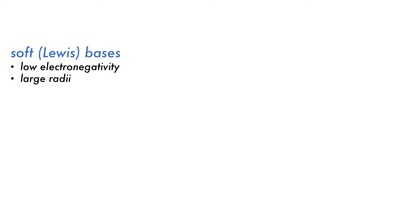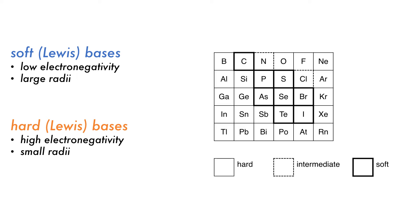Soft Lewis bases usually have low relative electronegativity for non-metals and large radii. Hard Lewis bases are generally the opposite, with low electronegativity and small radii. Due to trends in size and electronegativity in the P-block, each type lies in a distinct region. This helps us to remember them.